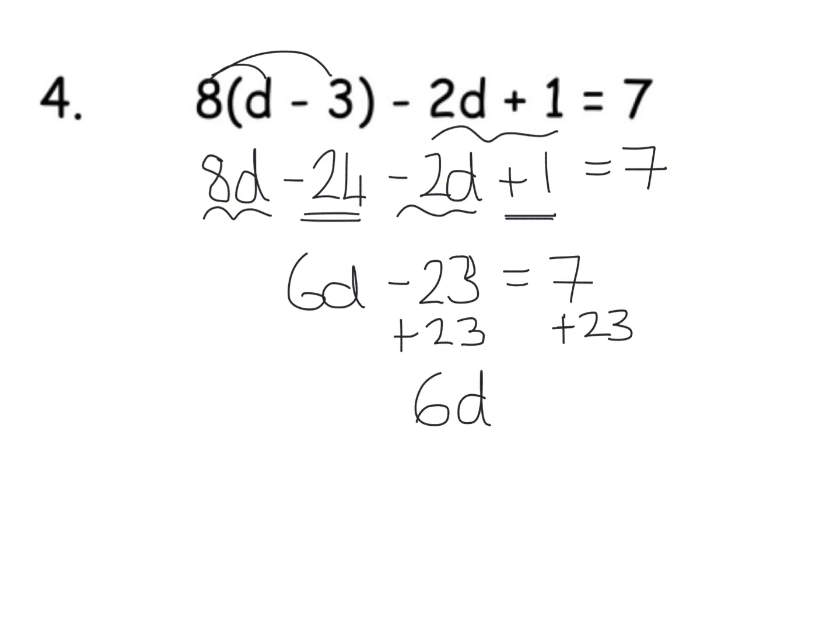Sorry, I should have said add—I wrote a takeaway. So 7 add 23 is 30, and 30 divided by 6 is 5. So d is the number 5.